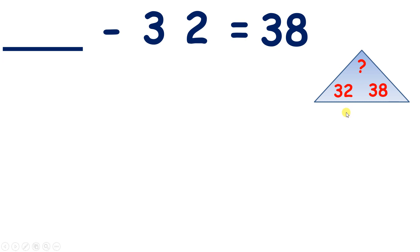Well, remember with number family triangles, we know that if you add the numbers at the bottom, you get the number at the top. So let's do 38 add 32.